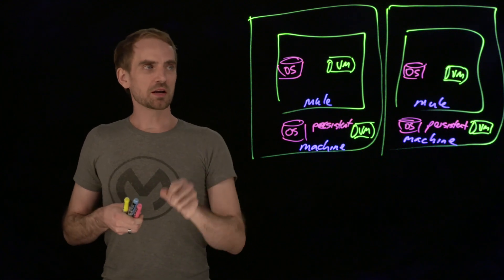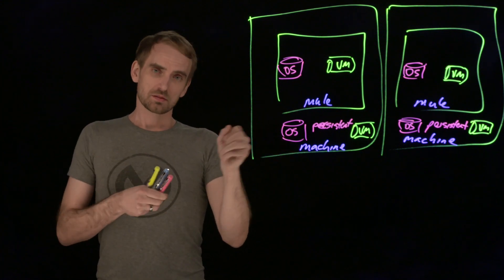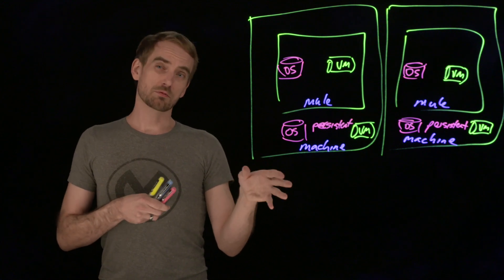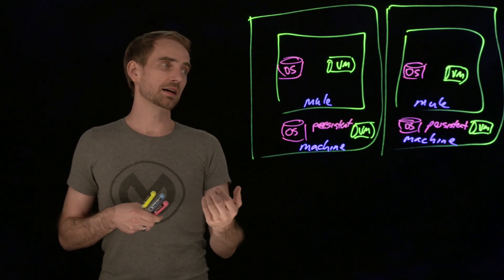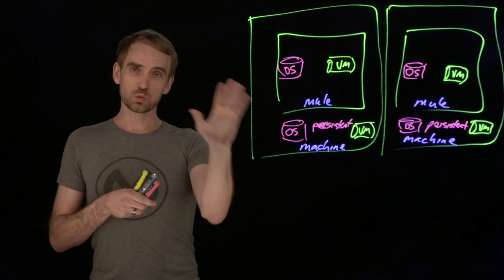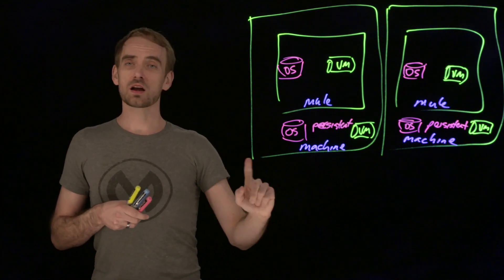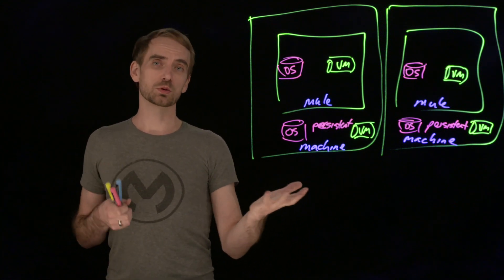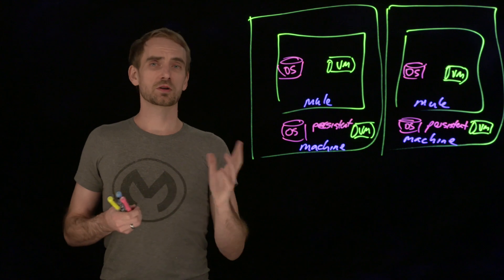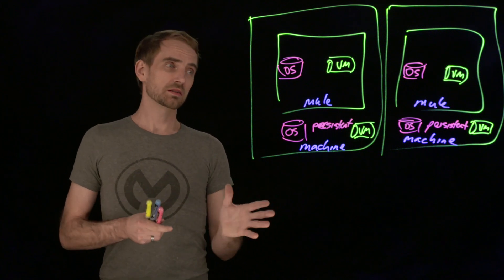So in memory, faster, persistent, slower, but reliable. So it'll survive a restart. But if you lose one of the machines, there is no sharing over to the other one. So that data would be lost. And that's the first option of your runtime plane configurations.